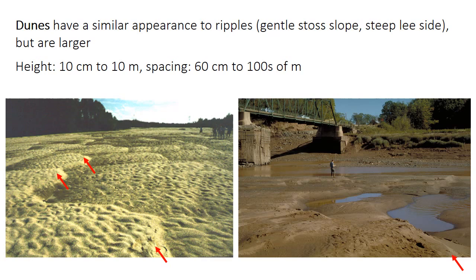The other really common type of bedform is called a dune. Dunes look like giant ripples — they have a gentle upstream stoss slope and a steep downstream lee side. The height of dunes is typically tens of centimeters, but in unusual circumstances they can reach meters in height if the flow is quite deep, and their spacing is on the order of a few meters, sometimes tens or even hundreds of meters. Dunes migrate in the downstream direction because there is erosion on the stoss side and deposition on the lee face. In these photos, I've marked the lee faces of the big dunes with red arrows, and in both pictures the dunes have ripples superimposed on their surfaces.